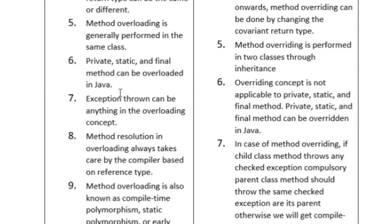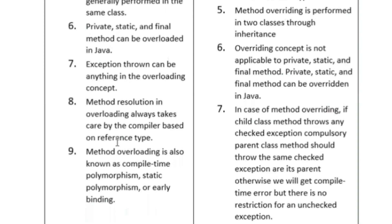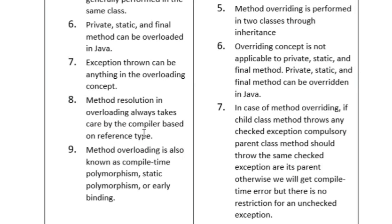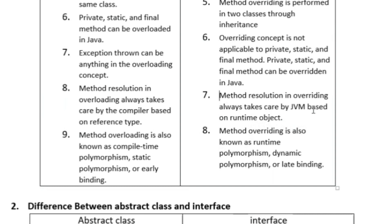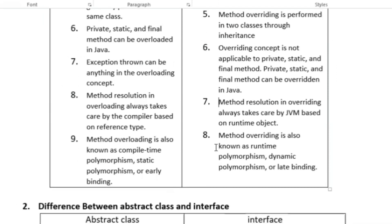Method overloading is generally performed in the same class only, whereas method overriding is performed in two classes through inheritance. Private, static, and final methods can be overloaded in Java, whereas in overriding, private, static, and final methods are not applicable. Method resolution in overloading is always taken care of by the compiler based on reference type, whereas in overriding it is always taken care of by the JVM based on runtime object type.